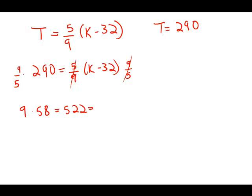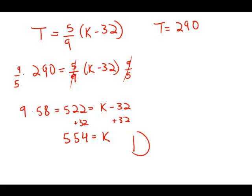So 522 equals k minus 32. Add 32 to both sides and we get 554 equals k. This is answer choice D.